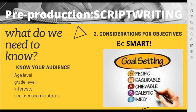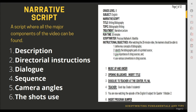Okay, the narrative script. As I mentioned, this is one of the three scripts that should be done in the pre-production phase. A narrative script is where all the major components of the video can be found — description, directorial instructions, dialogue, sequence, camera angles, and the shots used. This is an example of a narrative script. I will show the narrative script that we did last week — I hope this is clear.